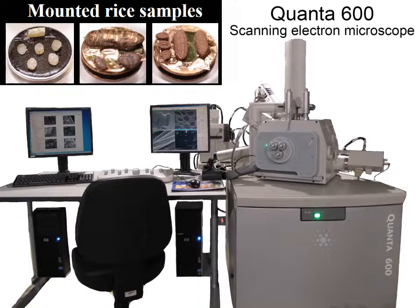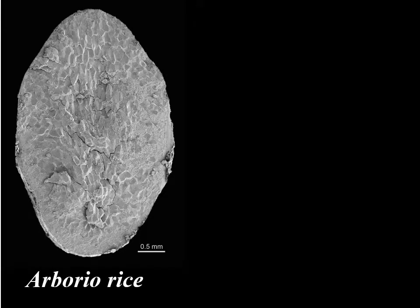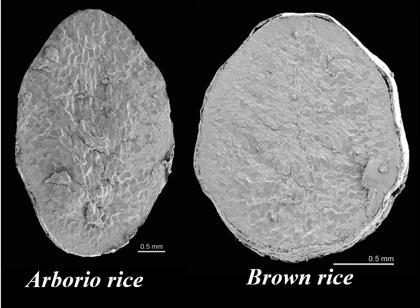The samples in the microscope are manipulated by the microscopist to reveal the structures of interest — in this case, the interior of a rice grain. Cross sections of two different kinds of rice are shown: Arborio rice at left and brown rice at right. The micrographs are shown as the microscope has produced them, but the surroundings of the grain have been turned black. The grains are compact with tightly packed endosperm, that is, starch granules.